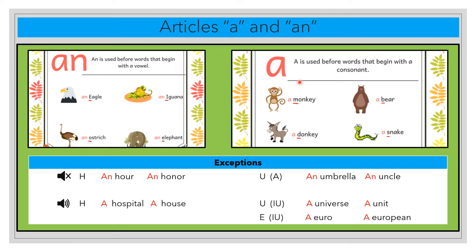With the article a, we use words that begin with a consonant. For example, monkey begins with m, donkey with d, bear with b, and snake with s. So after a, we need a word that begins with a consonant: a monkey, a bear, a donkey, and a snake.